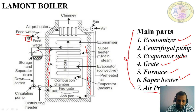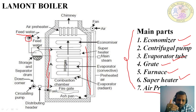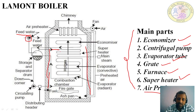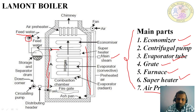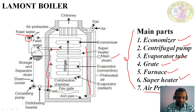From the storage and separating drum, the next component is the superheater. When water enters the storage and separating drum, half of the water gets converted into steam. That steam is sent through the superheater, which is also located in the path of the flue gases. Heat exchange takes place again, and that steam gets converted into superheated steam. This superheated steam connects directly to the main steam line, from which it is extracted for further applications.